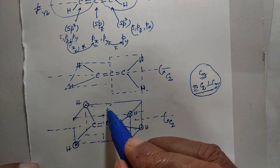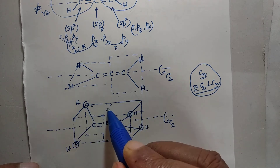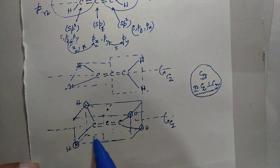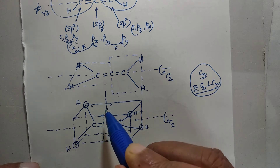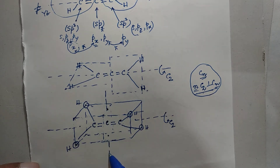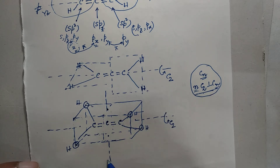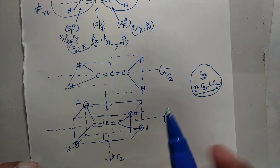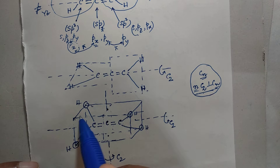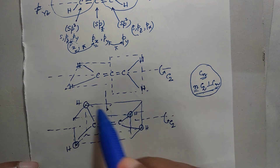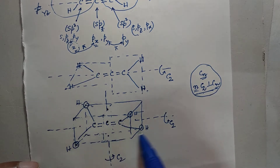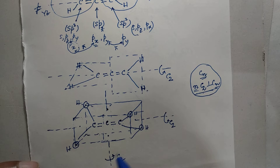Now, through the center of the top rectangular face and the center of the bottom rectangular face, imagine an axis. This line also acts as a two-fold symmetry axis. You can rotate the whole box: the top will remain on top, the bottom will remain on the bottom, and only the hydrogen atoms will exchange places. Therefore, this is a C2 axis, and it is perpendicular to the first one.